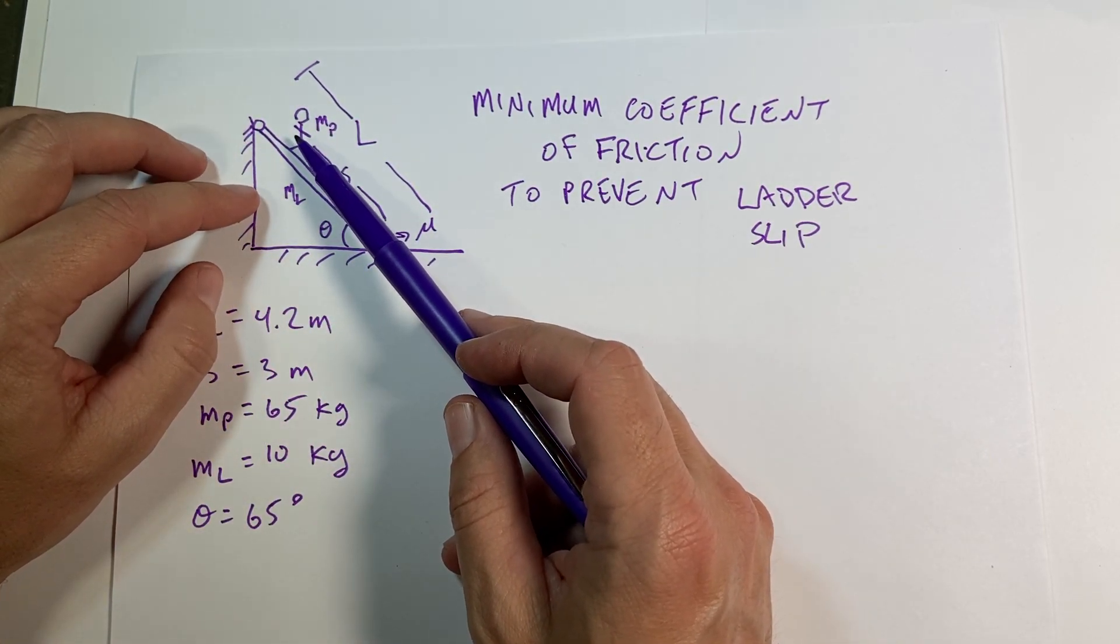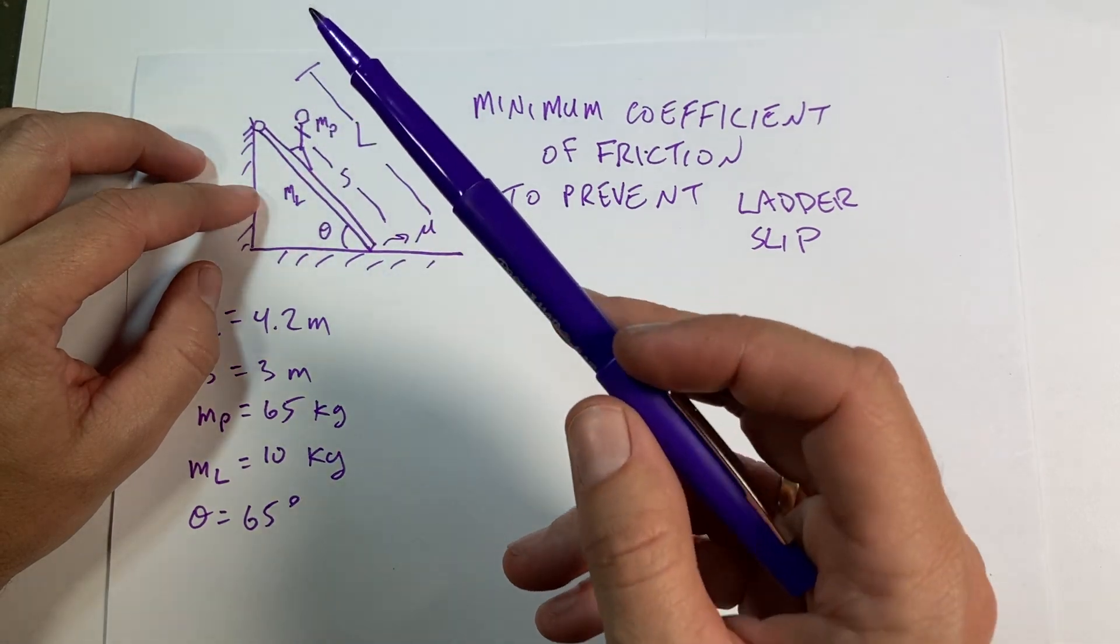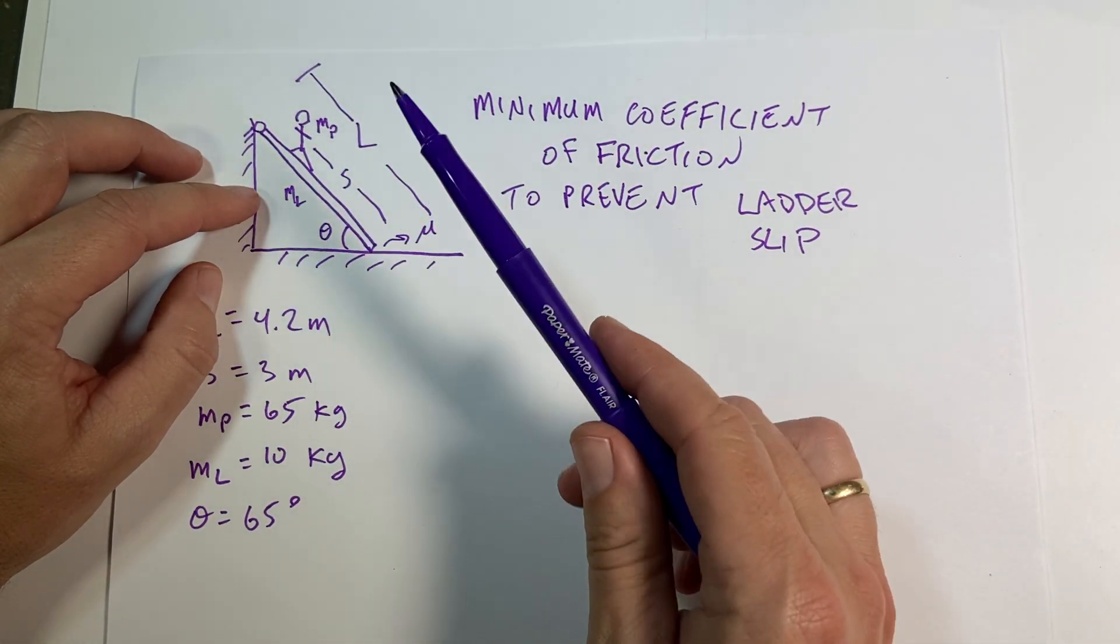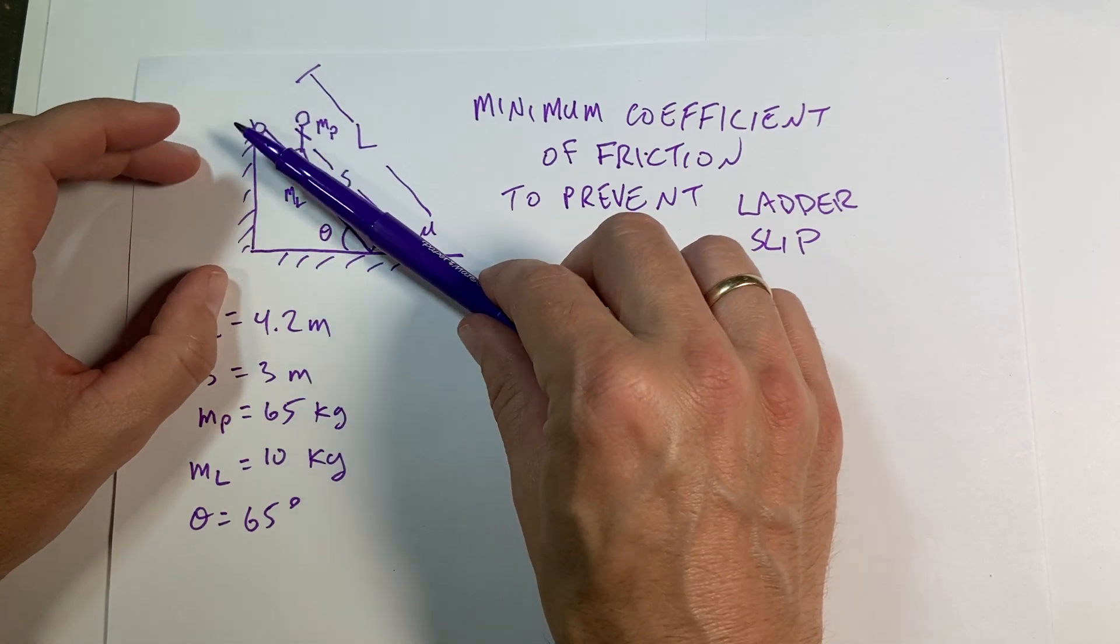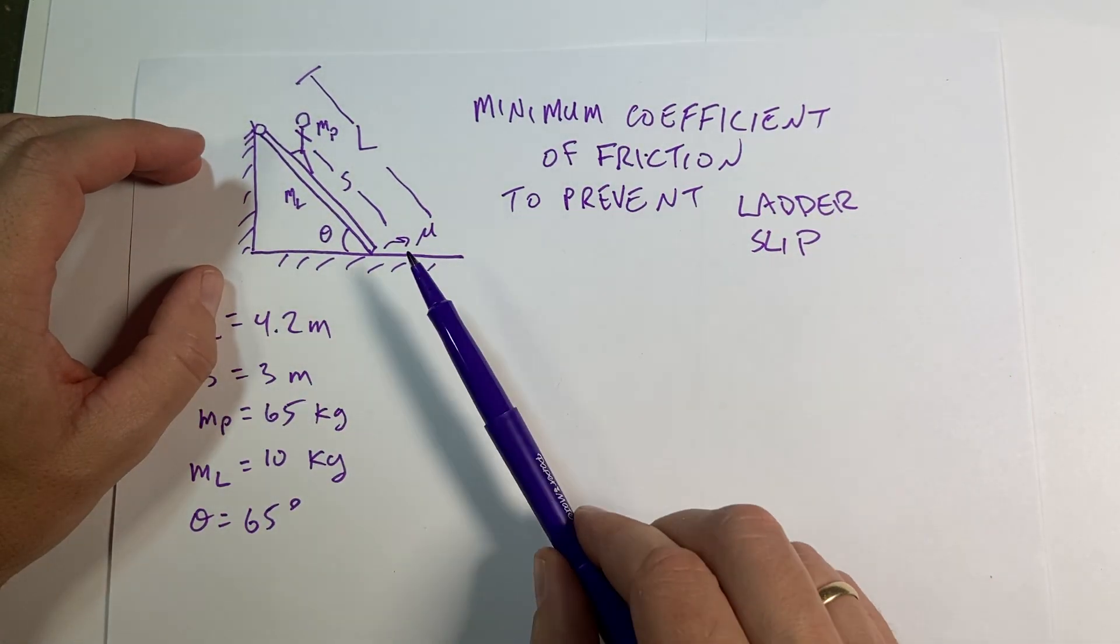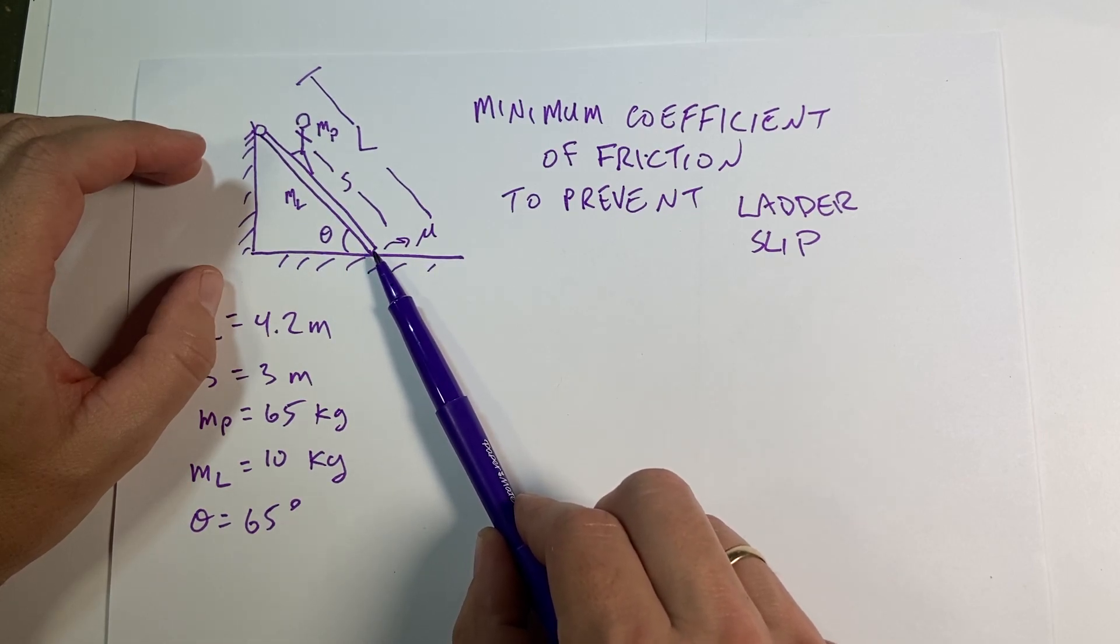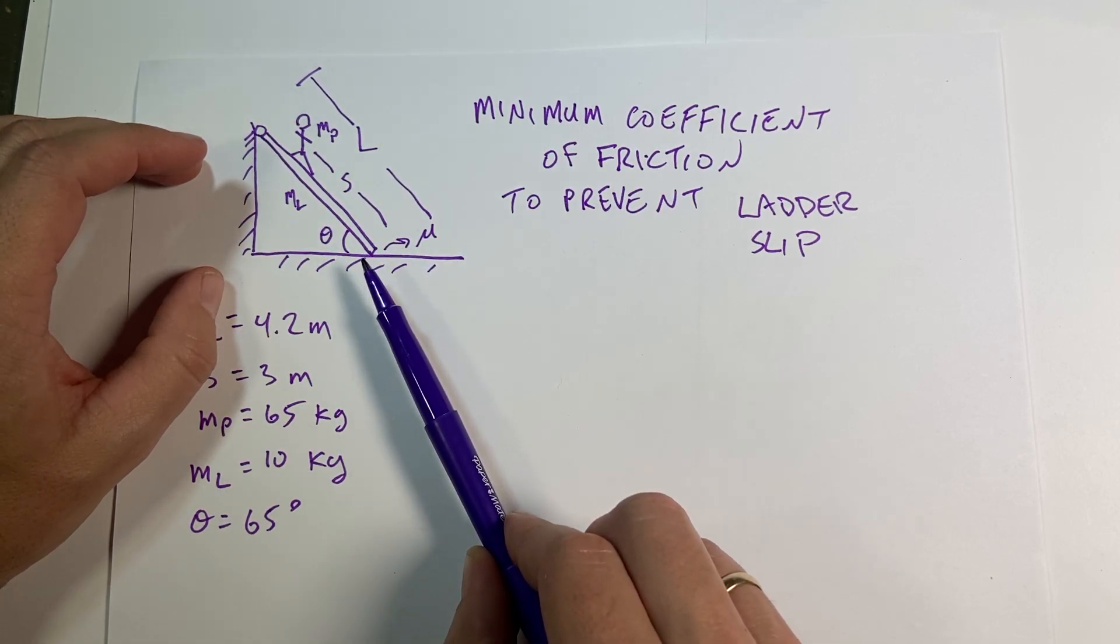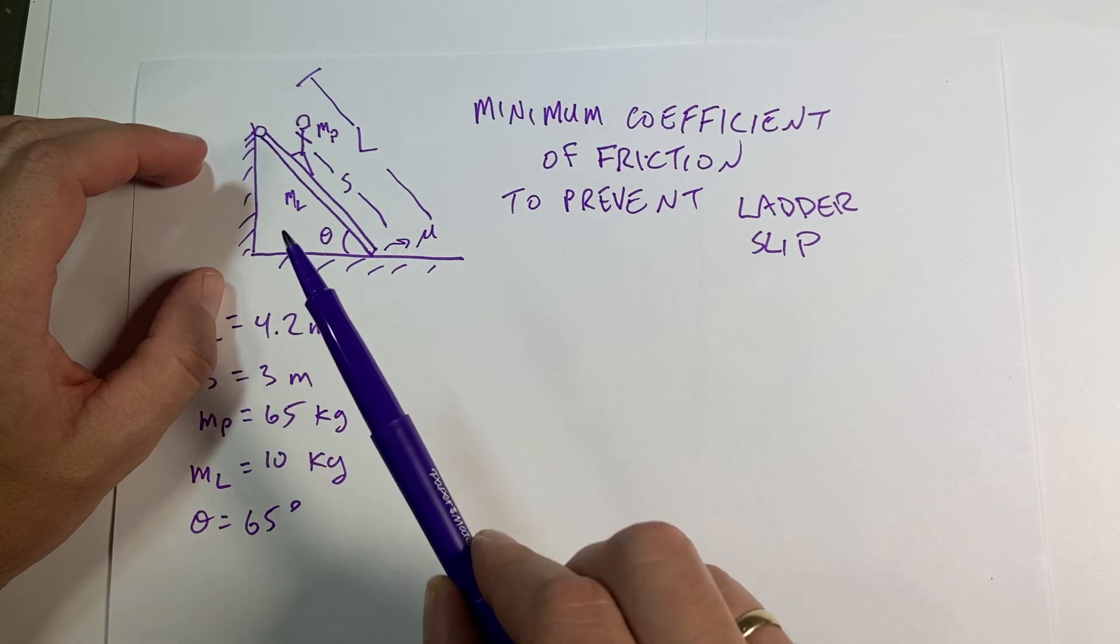And it's not all the way to the top. And so here's the person. So the question is, you know, if you can imagine if this was on ice, the ladder would just go and flip down, which is a pretty cool experiment, but don't do it. So the question is, what's the minimum coefficient of friction down here so the ladder won't slip. And that's what we're going to calculate.